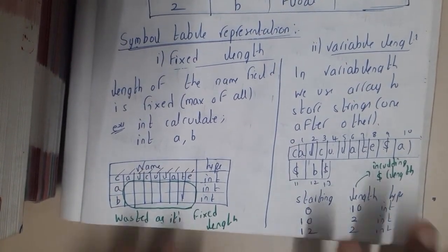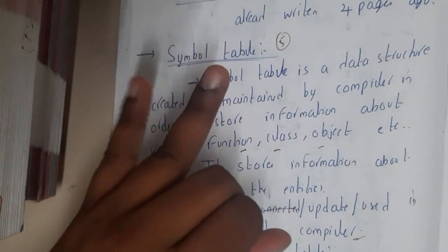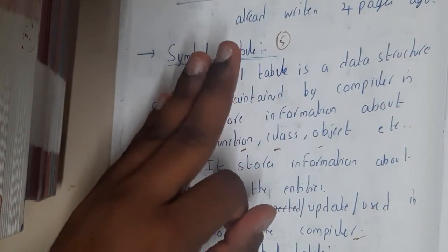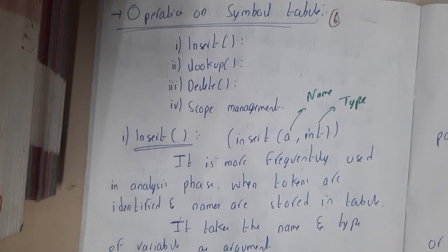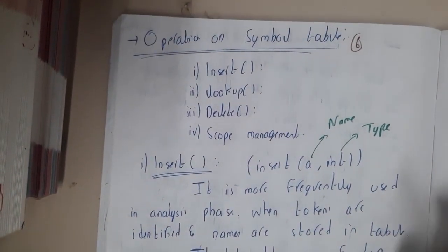In the next lecture, we'll be discussing various operations which we can do on symbol tables. You need to have operations like insert, search, delete, manage scope, and all those things.